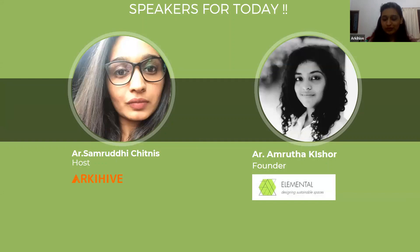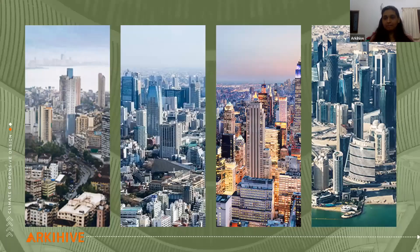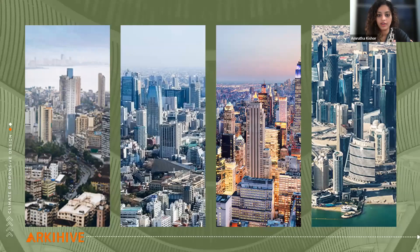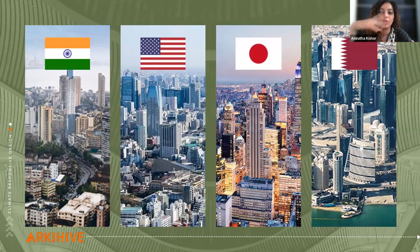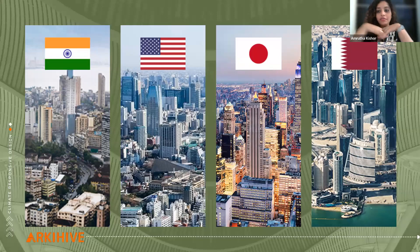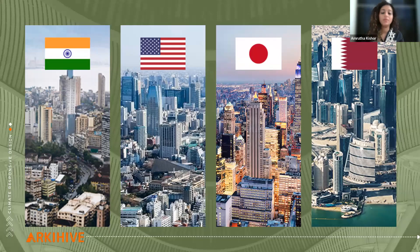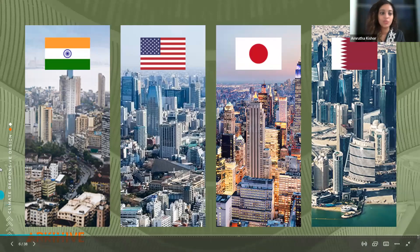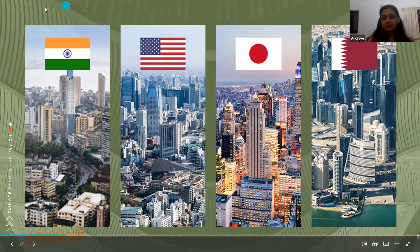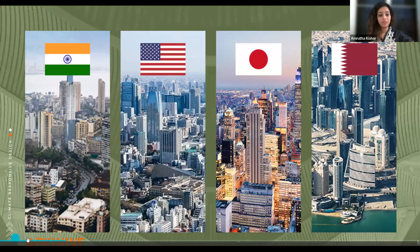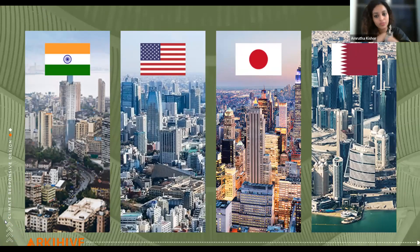You can see four images of cities — are they different cities or all the same city? Looking at them, they might as well be the same city, but it's strange to know they are actually in four different parts of the globe. The first on the left is Mumbai, then Chicago in the USA, then Tokyo in Japan, and finally Doha in Qatar. How did this happen?